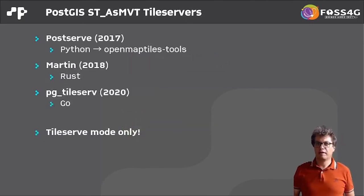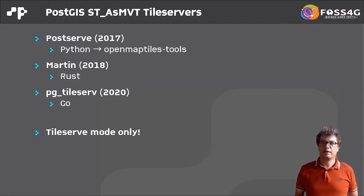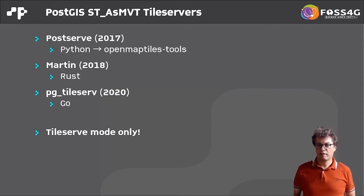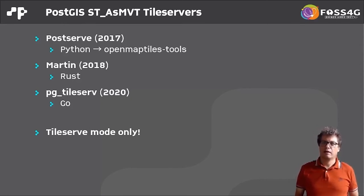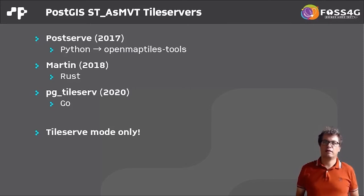The last group is a collection of tile servers based on the PostGIS ST_AsMVT function — these are front ends for getting vector tiles directly out of PostGIS. PostServe is one, written in Python, now part of the OpenMapTiles tools collection. Martin, published in 2018 and written in Rust, provides an easy command line for getting tiles directly out of PostGIS. The youngest one is pg_tileserv, which is roughly the same as Martin but written in Go. All of these are tile servers creating tiles on the fly, so you need an additional seeding tool for populating the cache.